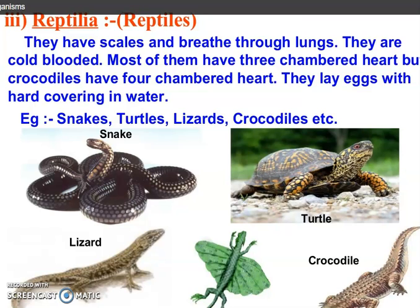Third class is Reptilia. They have scales and breathe through lungs. They are cold-blooded and most of them have a three-chambered heart, but crocodiles have a four-chambered heart. They lay eggs with a hard outer covering. Examples are snake, turtles, lizard, crocodile, etc.